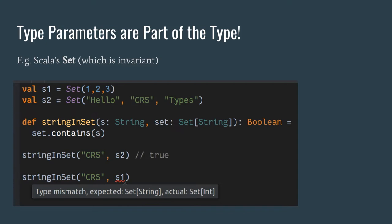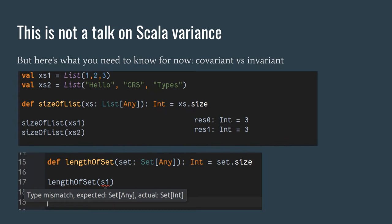Set is invariant. List is covariant — if you have something that takes a List[Any] you can pass it any kind of list. But with Set, if you declare it as Set[Any] then what you pass must be exactly Set[Any]; if you pass anything else it won't compile. Given that, let's see what we can do with CRSs to disambiguate them.